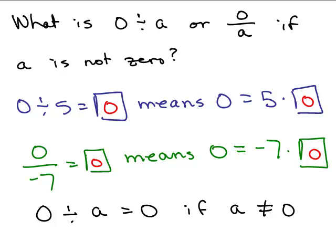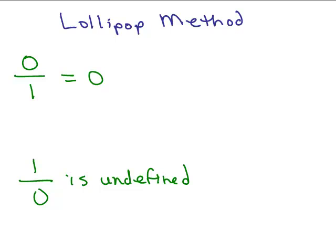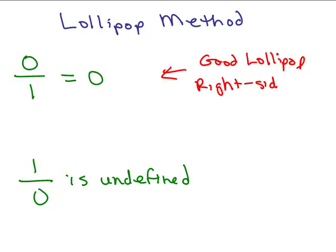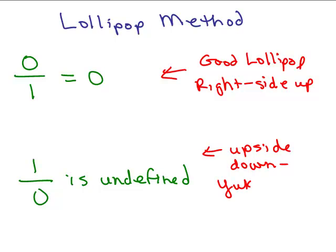There's one more way to remember this — it's called the lollipop method. Instead of using any number, just use the number one. If I have zero divided by one, we determined that's zero. And one divided by zero — remember when you divide by zero, it's undefined. Here's the way to remember it: zero over one is a good lollipop because it's right side up — still good to eat — so the answer is zero. One over zero is upside down, sticking to the floor — it's yucky, it's on the floor — so that's the bad lollipop, and it's undefined.